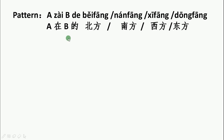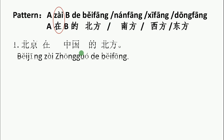In this pattern, we also need to pay close attention to the preposition 在. Now let's look at some sentences. Number one: 北京在中国的北方。 So 北京 is in the north part of China.